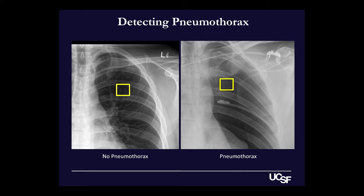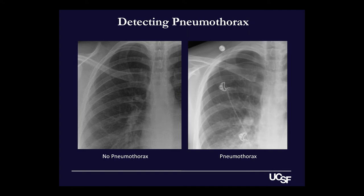Looking at the left upper chest in these two images, we could imagine that a filter might have one level of activation due to that fine branching pattern of the lung parenchyma, and it may have a very different level of activation when presented with this very monotonous, dark space that lacks those markings. This might be one feature that helps distinguish between the presence or absence of lung in an area that's supposed to have it. Similarly, another filter might pick up on the presence of this extra line in the upper chest that doesn't seem to be part of the ribs or the normal configuration of the lung, and this may tip the algorithm in favor of abnormal or pneumothorax.